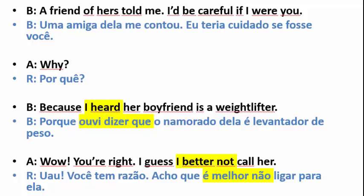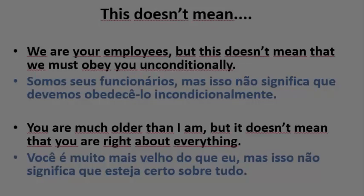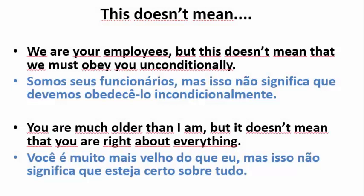19. Wow, you're right. I guess I better not call her. Sentence Structure Number 6: But this doesn't mean that. Examples: 1. We are your employees, but this doesn't mean that we must obey you unconditionally.